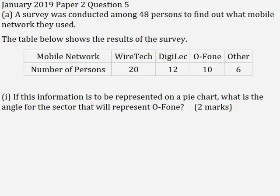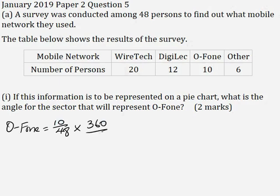A survey was conducted among 48 persons to find out what mobile network they use. The table below shows the results of the survey. Part 1: If this information is to be represented on a pie chart, what is the angle for the sector that will represent Ophone for 2 marks? There are 10 persons who use Ophone out of the 48 persons surveyed. So, Ophone is equal to 10 over 48 multiplied by 360 over 1. This will give me 75 degrees.